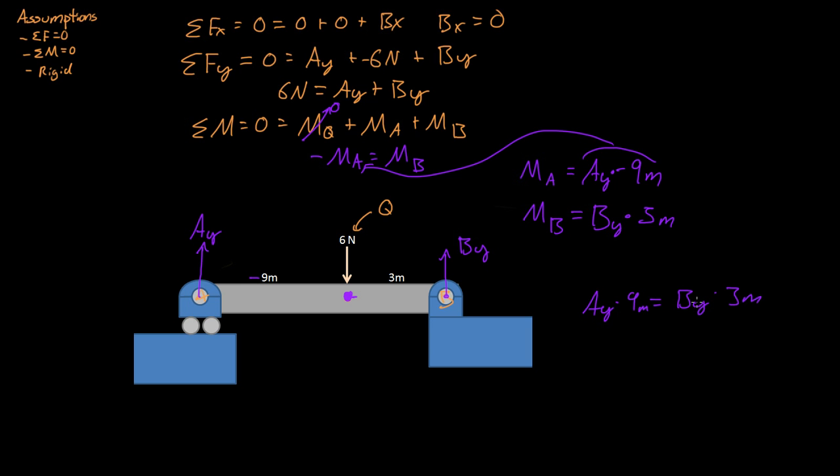So then we just divide by three. Divide both sides by three meters. So then we have three AY must equal BY. So A is a third of what B is. Instead we can put that's also AY is equal to BY over three.